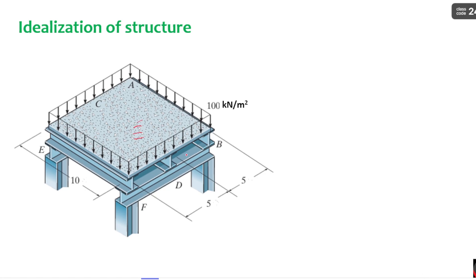Let us consider this structure. Here you can see this is a slab which is supported on three beams. After that, these three beams are supported onto two other beams, and thereby the load is transferred to the columns. I am considering the self-weight of the structure as negligible, and 100 kN/m² is going to act as pressure on the slab. I am considering these three as level one beams and these two beams as level two beams.